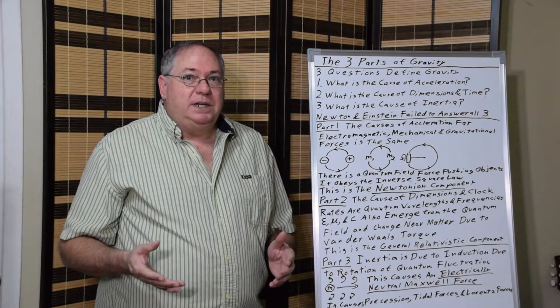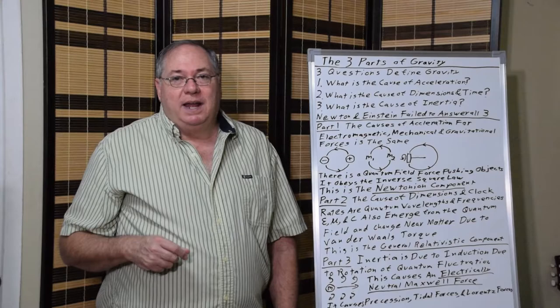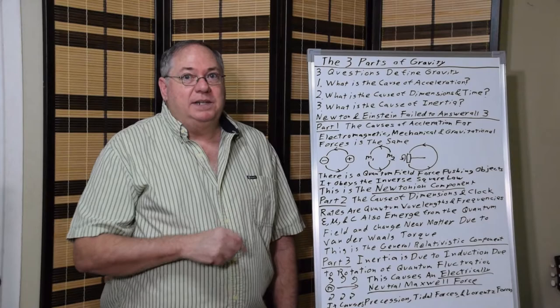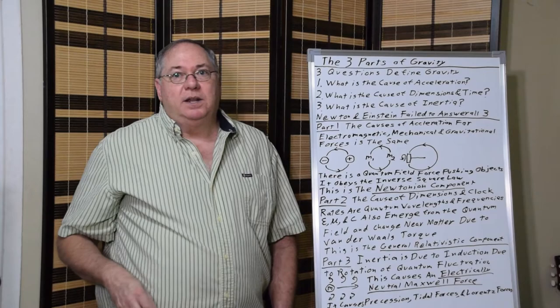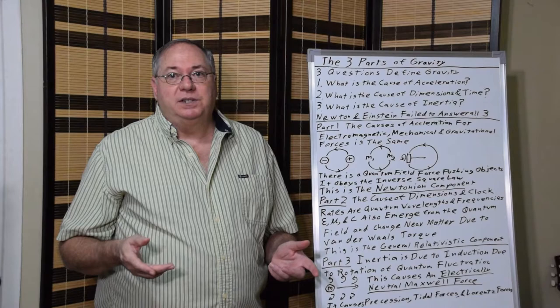That is the reason for the anomalous precession of Mercury. It's not general relativity. And so you need that component, the third component, the inertial Maxwell force, in order to explain precession of Mercury.